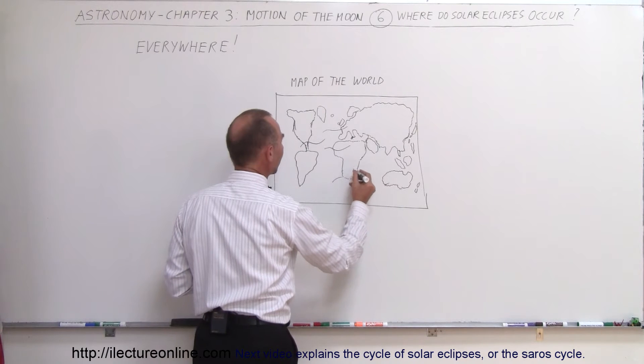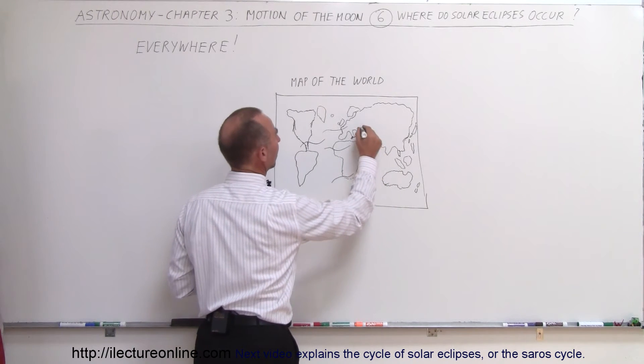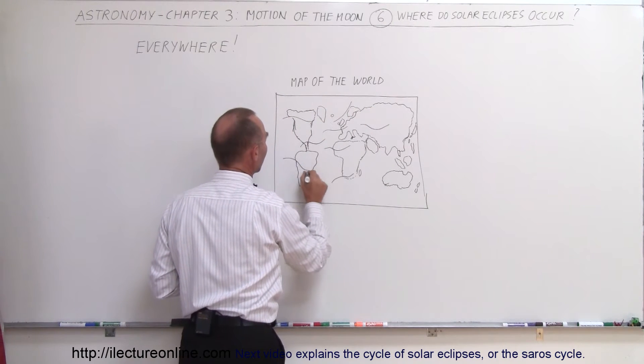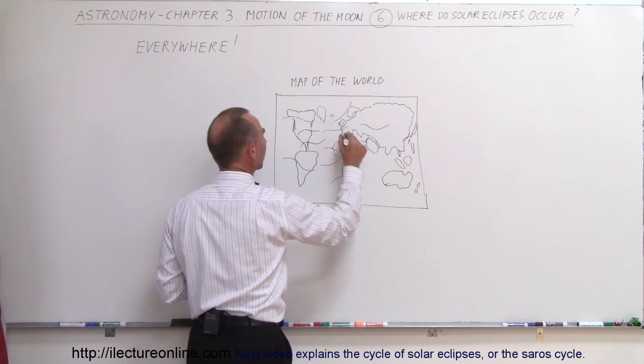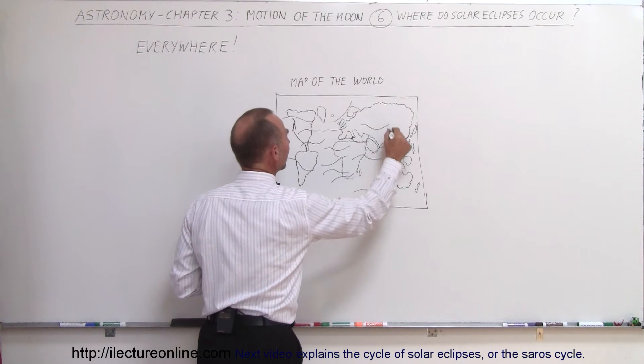But you can see that over time, as time goes on - whoops, my pen is not working too well here. Oh, there we go. So you can see that sometimes you'll get more and more solar eclipses over time, and you can see that as time goes by, they'll be seen everywhere.